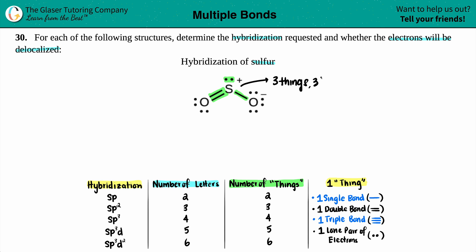So three things, three letters, and that is sp2. And that is your hybridization for the sulfur.